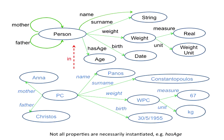Now if we instantiate each of those properties we get what appears at the bottom of the picture. We have an entity PC which is an instance of person, that has mother — another entity Anna — and father — another entity Christos. The name of PC is Panos, the surname is Constantopoulos, and we also have the weight and the date of birth of this person.